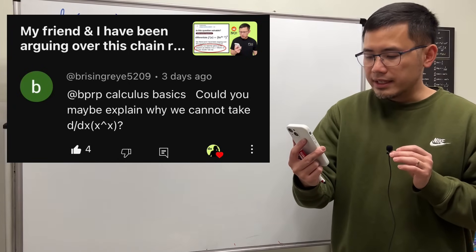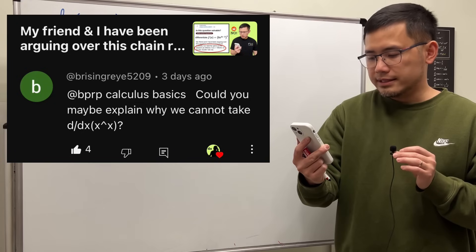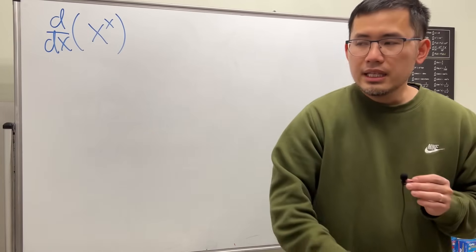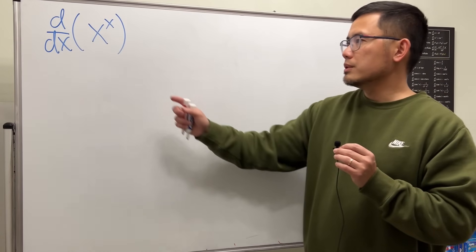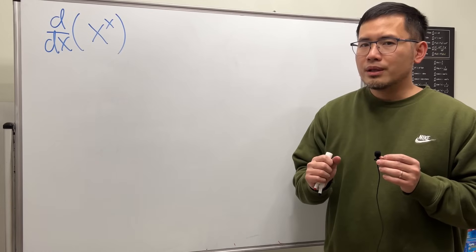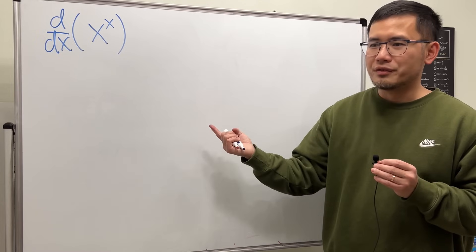Could you explain why we cannot take the derivative of x to the x power? The answer to your question is that, in fact, we have no issue with taking the derivative of x to the x power, but it's the issue of how people take this derivative.